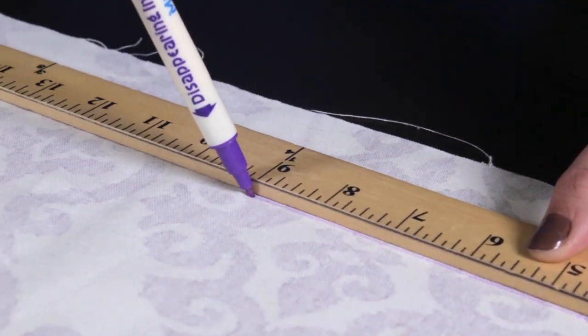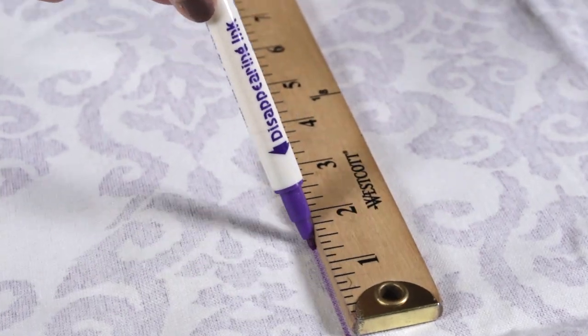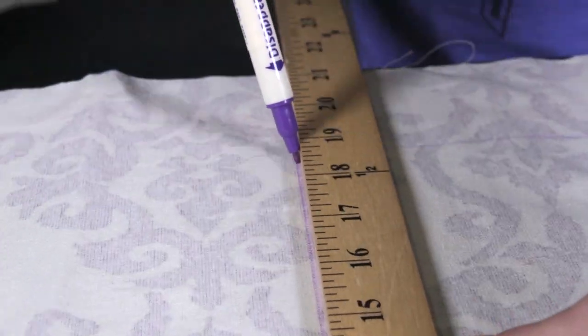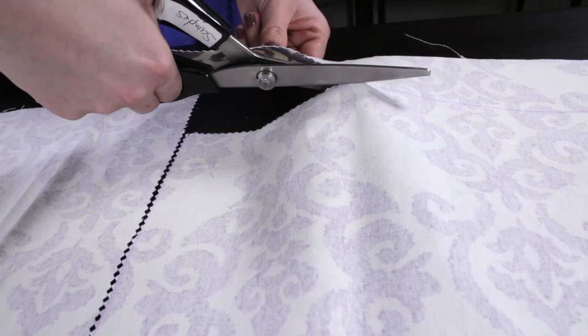Measure and cut out a 19 inch by 15 inch rectangle on the wrong side of the fabric. Use the pinking shears to help prevent fraying.